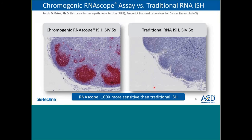As a result of the RNAscope probe design and branch DNA amplification strategy, the technique is approximately 100 times more sensitive relative to traditional RNA-ISH methods, which utilize typically direct labeling of probes through a label such as digoxigenin combined with a secondary antibody approach. In this figure you can see the difference between the chromogenic RNA-ISH assay for detection of simian immunodeficiency virus with RNAscope versus traditional RNA-ISH using digoxigenin-labeled probes.